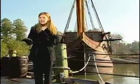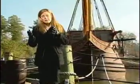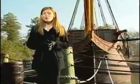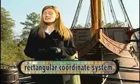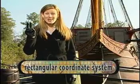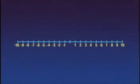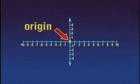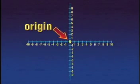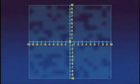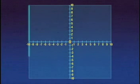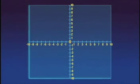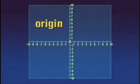Depending on the data that scientists are analyzing, they may need to use what we call the rectangular coordinate system. This system consists of not one but two number lines. These number lines cross at their origins and are perpendicular to each other. The area they create is called a plane — a two-dimensional object. The central point where the two lines cross is called the origin.